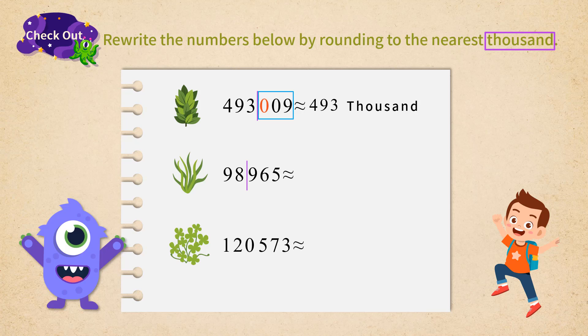For the second number, 98,965, the first number after the thousandth place is 9. 9 is greater than 5, so the thousandth place is added by an extra 1. The thousandth place is then 8 plus 1, which equals 9. So 98,965 is approximately equal to 99,000.